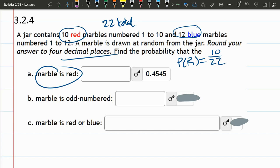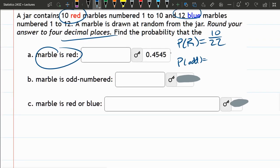Part B, marble is odd. Now odd could be red or blue. So probability of odd. So we have 10 reds, 1 through 10, 12 blues, 1 through 12.